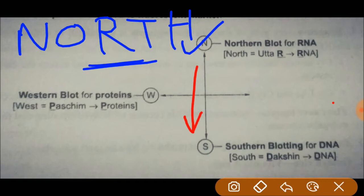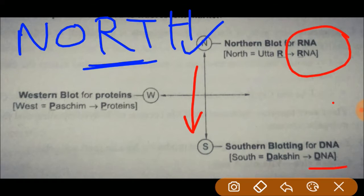Just opposite of north is south. So if north is RNA, then the opposite of RNA you can assume is DNA. So southern blotting contains DNA.